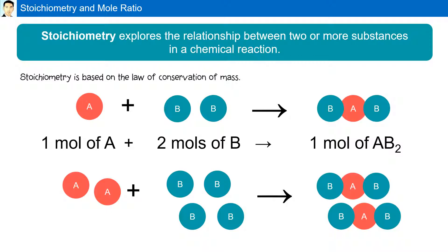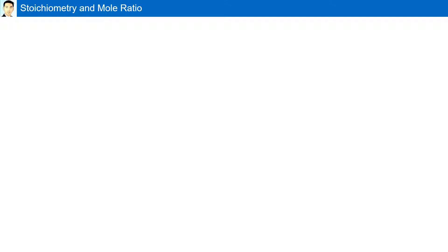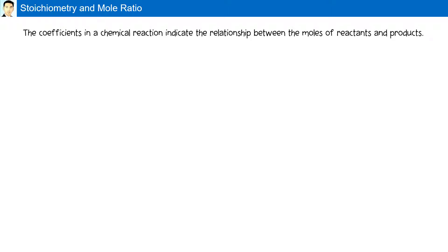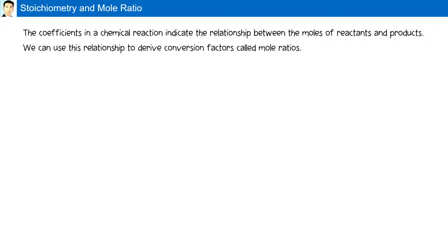This is stoichiometry — the mole ratios. How many moles of A would be needed to react with how many moles of B to produce how many moles of the product AB2. We can use mole ratios to help us solve problems based on stoichiometry. The coefficients in a chemical reaction indicate the relationship between the moles of reactants and products. We can use this relationship to derive conversion factors called mole ratios.